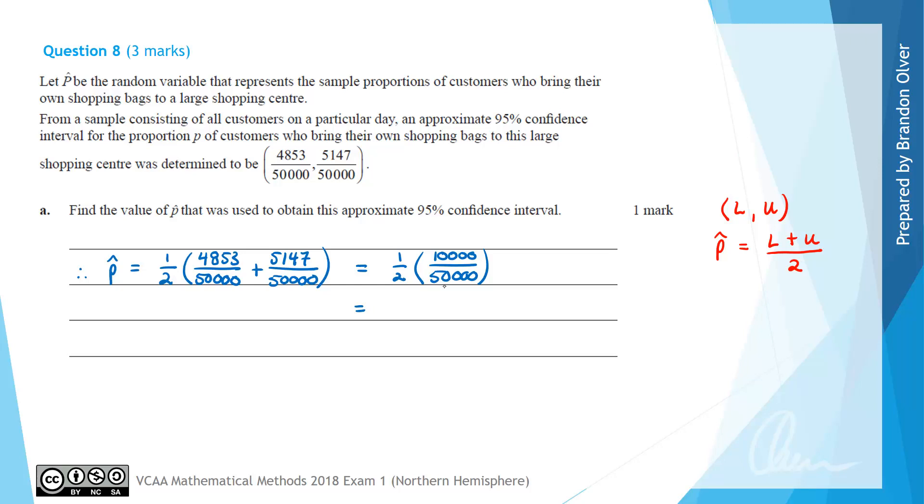When we simplify that down, it's 5000 over 50000, which is 1 over 10. So the P hat value that was used to obtain this confidence interval was 1/10 or 0.1.